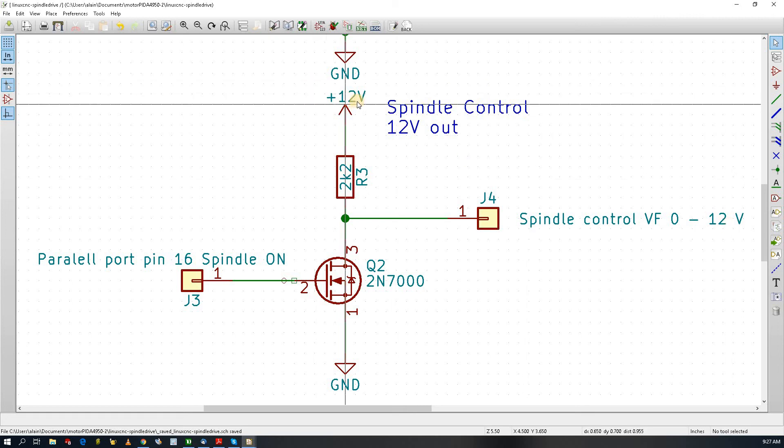So I use the 12 volts here for pull-up. 2k2 is fine and I get 0 to 12 volts for my spindle control. Now you may need to invert your signals here and there. You may need to invert your signal on LinuxCNC to make sure that it's compatible with your own spindle control.